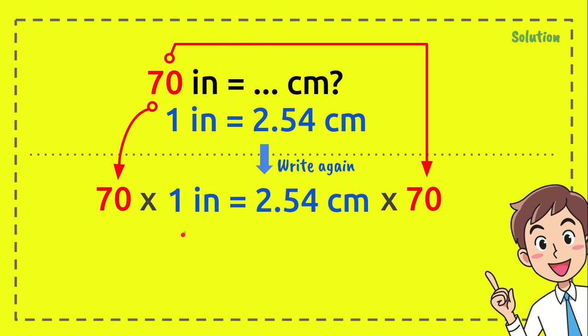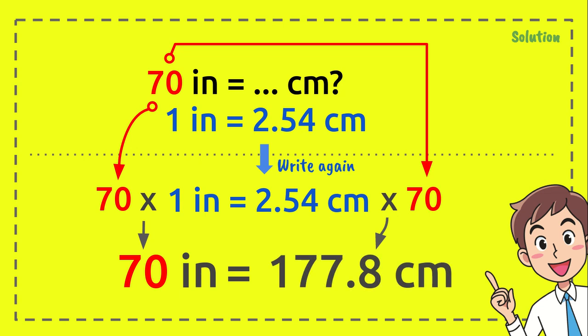Okay, now 70 times one inch equals 70 inches. It equals this number. And now 2.54 centimeters times 70 equals 177.8 centimeters, and that's the answer of this question.